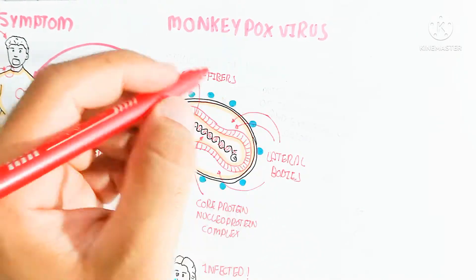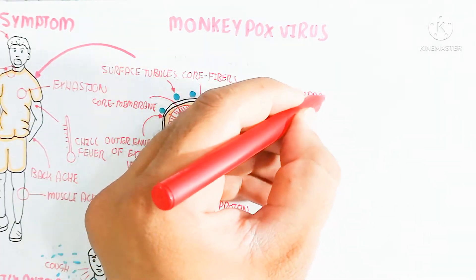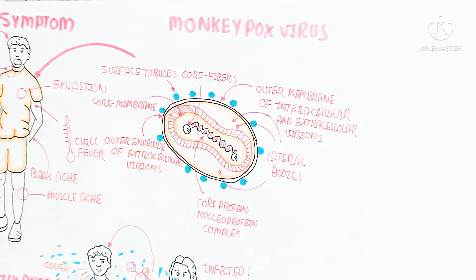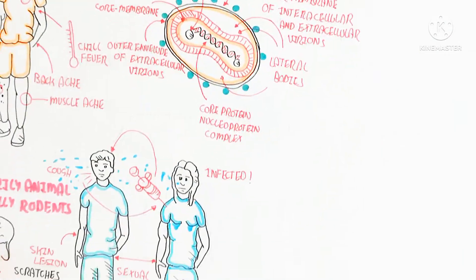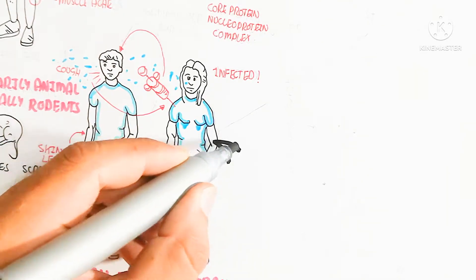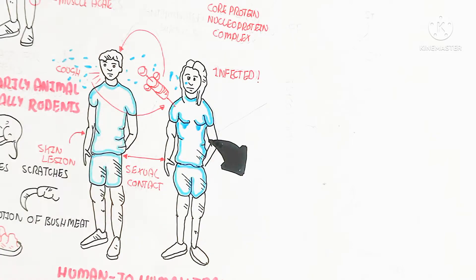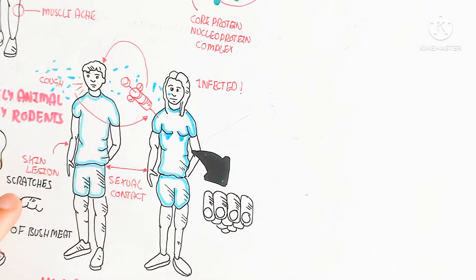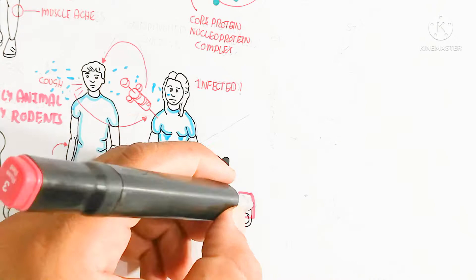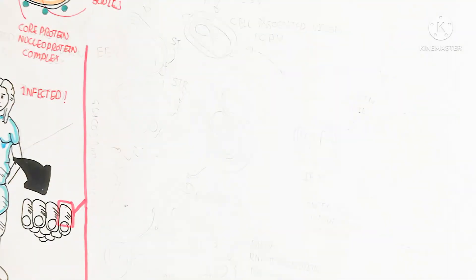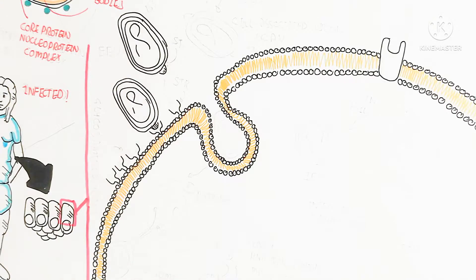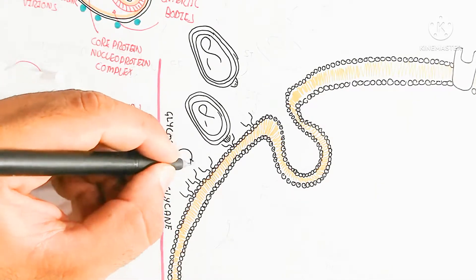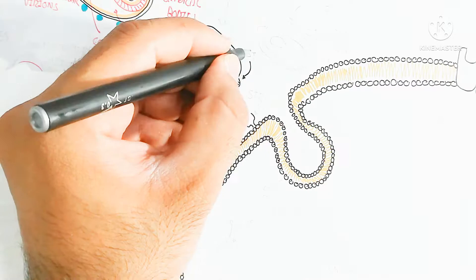The virus also contains lateral bodies and an outer membrane for both intracellular and extracellular virions — virions being the DNA-containing viral particles. The core protein nucleoprotein complex is also present in the outer envelope of extracellular virions. This brings us to understand how the virus infects host tissue.